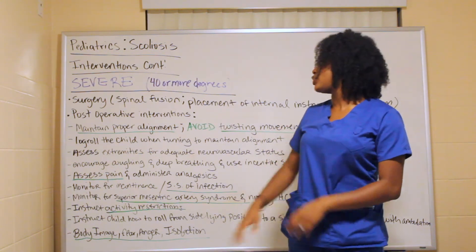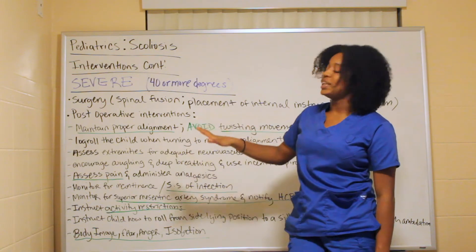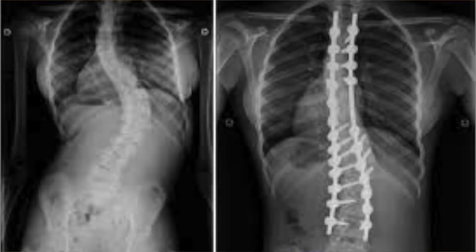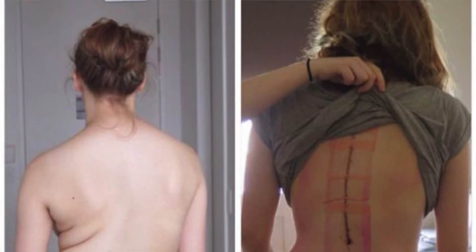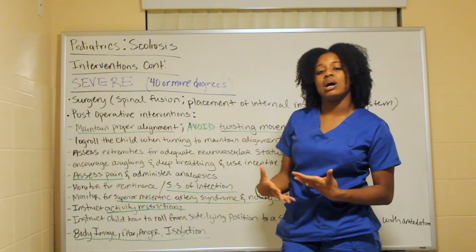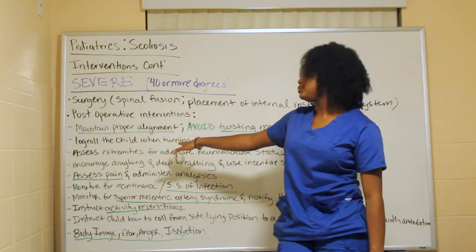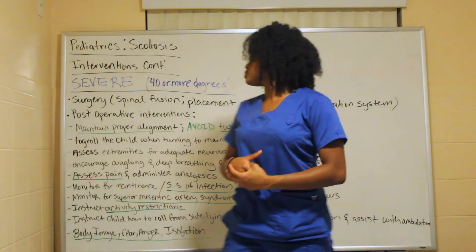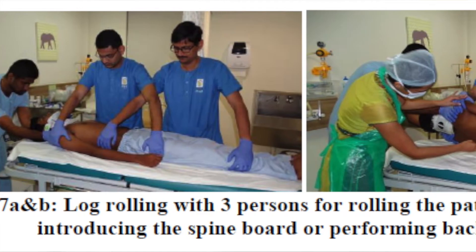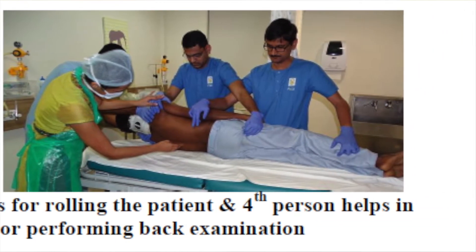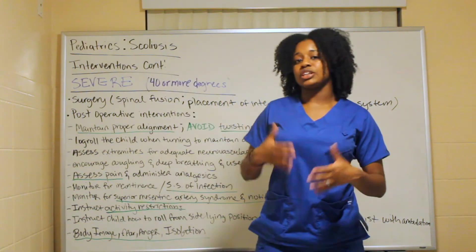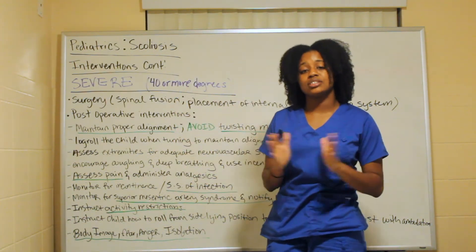For severe scoliosis — 40 or more degrees — the main intervention is surgery: a spinal fusion, which involves placement of an internal instrumentation system. Post-operatively, the nurse should maintain proper alignment and avoid twisting movements. When turning the child, use log rolling to maintain alignment. Assess the extremities for adequate neurovascular status, since you're working in the spinal area near nerves and vascular vessels.